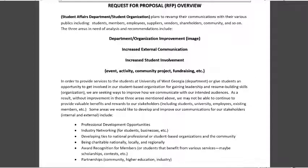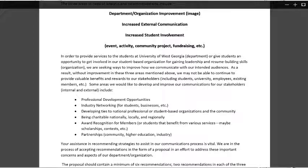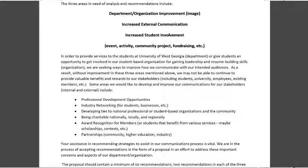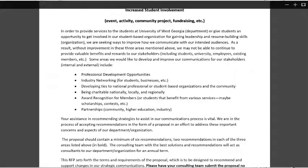In order to provide services to students at the University of West Georgia, or to give students an opportunity to get involved in a student-based organization for leadership and resume-building skills, they are seeking ways to improve how they communicate with their intended audiences. Without improvement in these three areas, they may not be able to provide valuable benefits and rewards to stakeholders. Areas to develop and improve include professional development opportunities, industry networking for students and businesses, developing ties to national or student-based organizations, being charitable nationally, locally, and regionally, award recognition for members or students, scholarships, contests, and partnerships between the community, higher education, and industry.